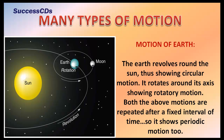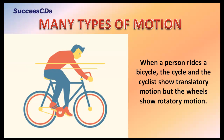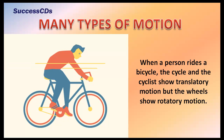The Earth revolves around the Sun, showing circular motion, and rotates around its axis, showing rotatory motion. Both these motions are repeated after a fixed interval of time, so it also shows periodic motion. When a person rides a bicycle, the cycle and the cyclist show translatory motion, but the wheels show rotatory motion.